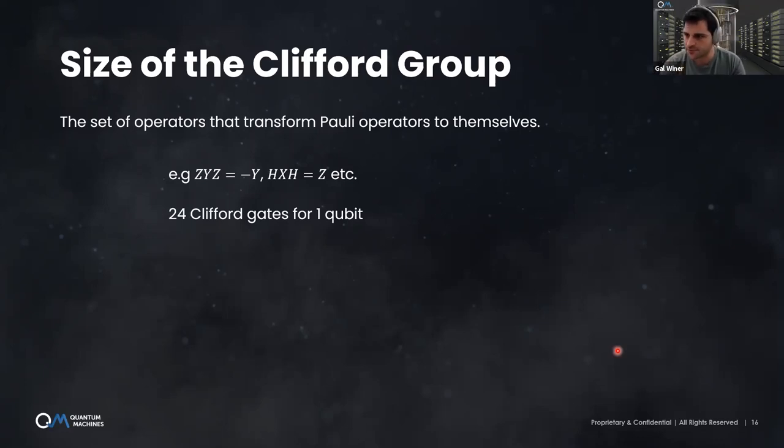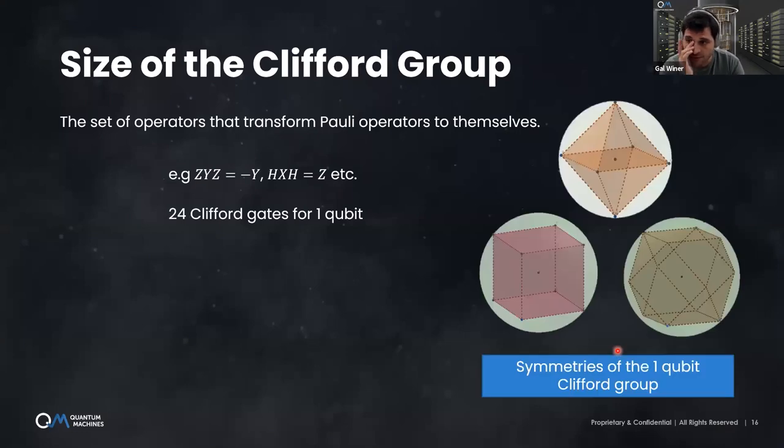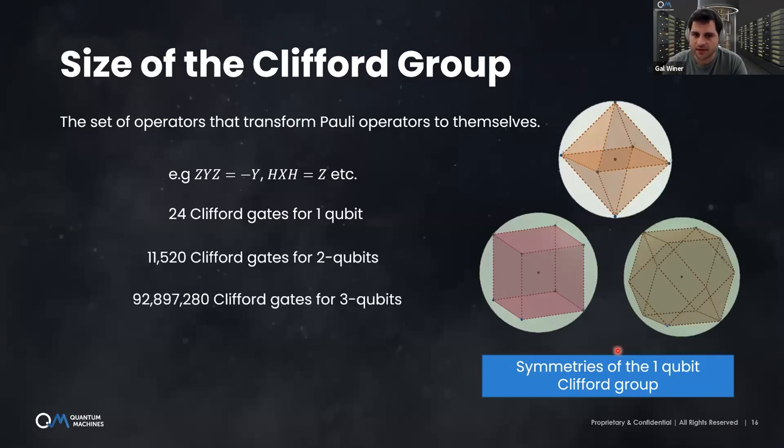There are two main challenges in running an RB protocol. The first one is generating this deep circuit made of Cliffords sampled from the group with uniform probability. If you need to prepare this ahead of time, you need to upload a long sequence to the memory of your signal generator each time you run the experiment. Just as a little spoiler, of course, this is not how we do it. The other challenge is to keep track and apply the correct recovery operation at the end of this procedure. So how do we address this first issue? How do we sample from the Clifford group? Is that hard?